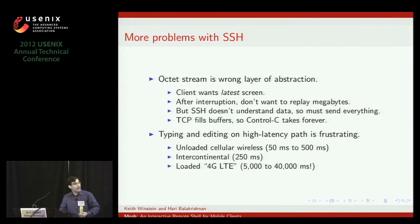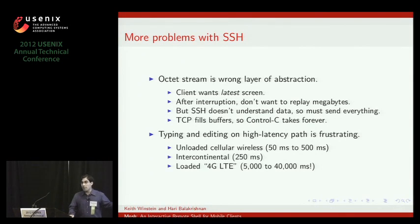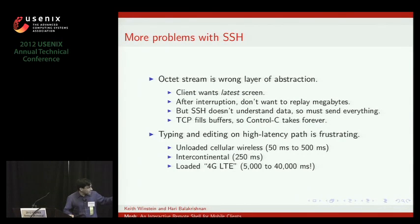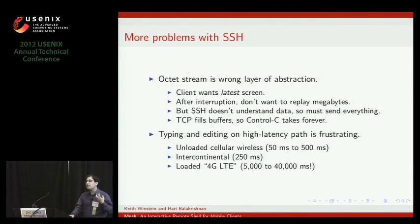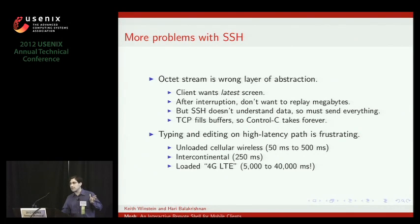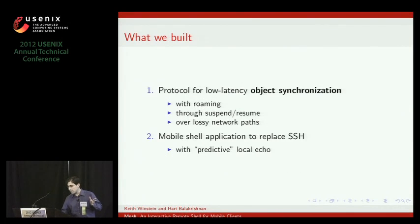And trying to type when you have these huge delays — today's networks are not faster. We've measured with Verizon's top product, their 4G LTE, delays of 40 seconds round trip time when you have one TCP download happening. So trying to type where you only see what you're typing 40 seconds later — that's terrible.